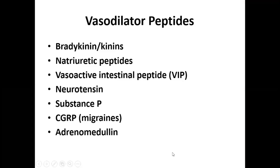Now we move to vasodilator peptides. The various vasodilator peptides secreted in our bodies are bradykinin or kinins, natriuretic peptides, vasoactive intestinal peptide (VIP), neurotensin, substance P, CGRP (responsible for migraines), and adrenomedullin. These all act as vasodilators, causing dilation of blood vessels and a reduction in blood pressure and blood volume.